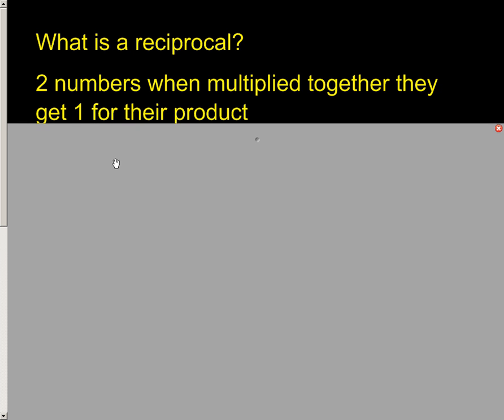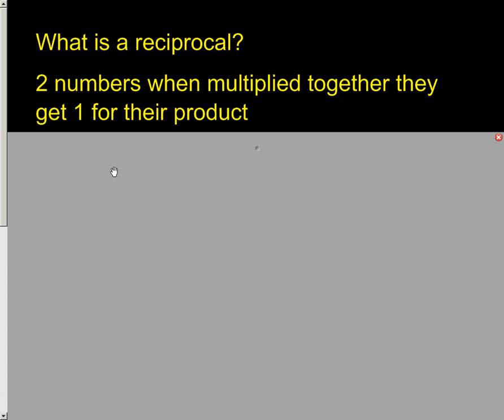Well, basically it's this. It's when you can get two numbers and when you multiply them together, their answer is positive 1. I mean, what I've got typed up there is two numbers when multiplied together, they get 1 for their product.